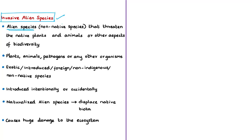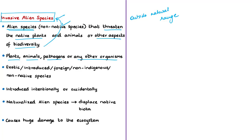In simple terms, alien species are species that occur outside their natural range. When these alien species threaten the native plants and animals or other aspects of biodiversity, they are called invasive alien species. These invasive alien species may be plants, animals, pathogens, or any other organisms that are not native to an ecosystem. They are also called exotic species, introduced species, foreign species, non-indigenous, or non-native species.